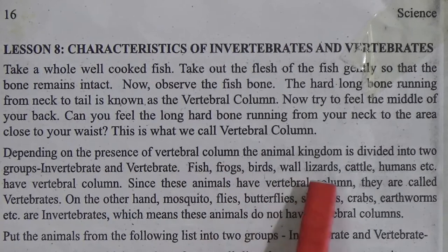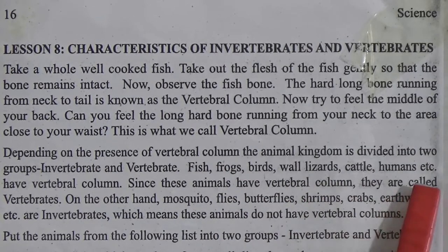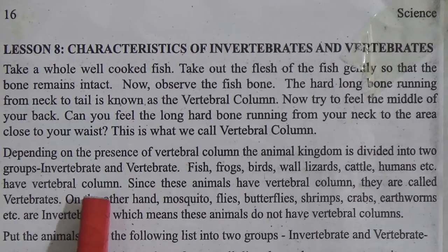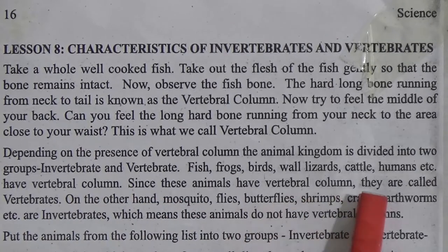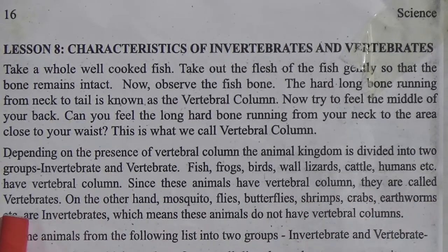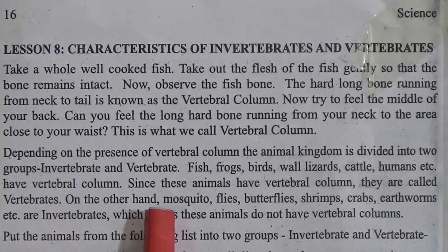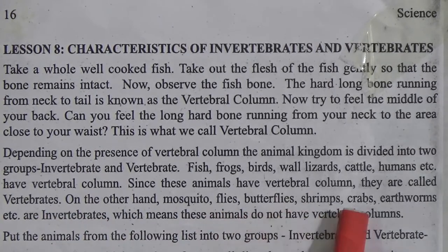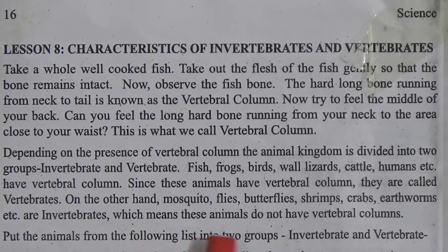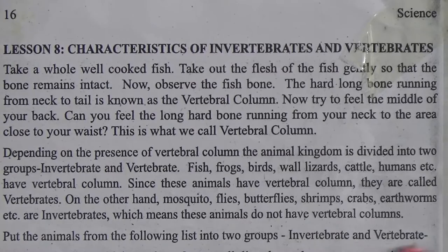Depending on the presence of the vertebral column, the animal kingdom is divided into two groups: invertebrates and vertebrates. Fish, frogs, birds, wild lizards, cattle, humans, etc. have vertebral columns, so they are called vertebrates. On the other hand, mosquitoes, flies, butterflies, shrimp, crabs, earthworms, etc. are invertebrates, which means these animals do not have any vertebral column.